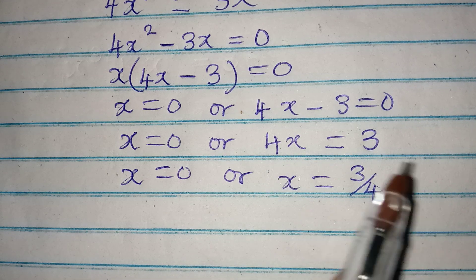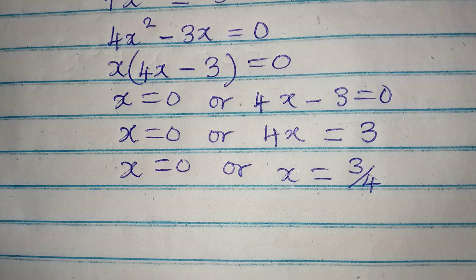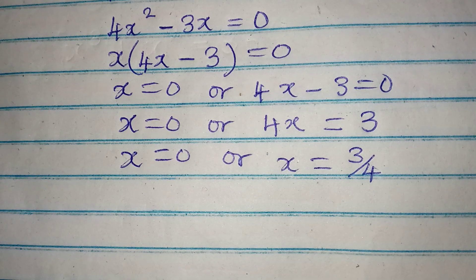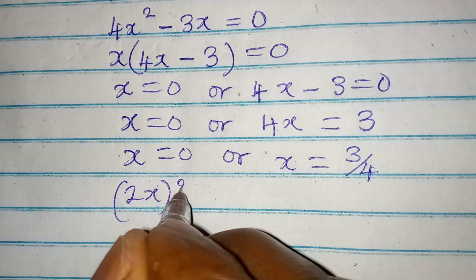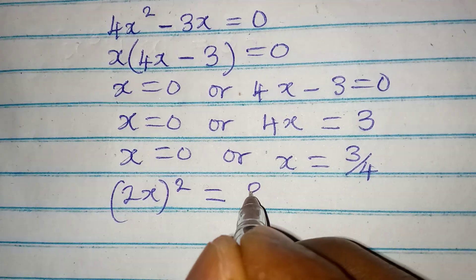Now the next thing is let's confirm our answer. Remember we had (2x)² being equal to 3x.